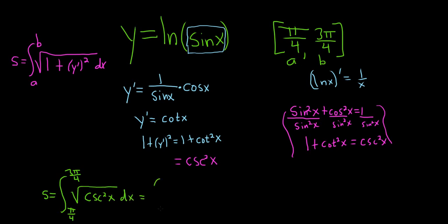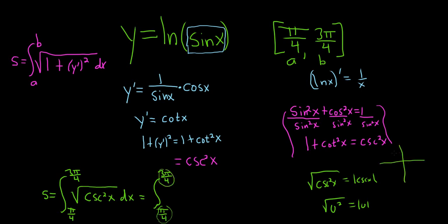This equals the definite integral from pi over 4 to 3 pi over 4. When you take the square root of cosecant squared, you get the absolute value of cosecant — because the square root of u squared is the absolute value of u. However, cosecant is 1 over sine, and our bounds are between pi over 4 and 3 pi over 4. On the unit circle, sine is the y-coordinate and is positive between these two angles, so cosecant is positive and we don't need the absolute value. If the bounds were in a region where sine is negative, cosecant would be negative and you'd have to account for it — just a subtle point.